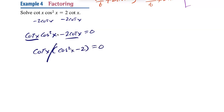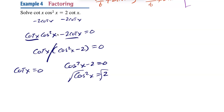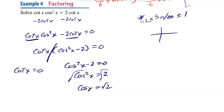Split and solve each factor separately. For cos²x − 2 = 0: add 2 to both sides, then square root to get cosine of x equals √2. But remember, sine and cosine must be between −1 and 1. √2 is bigger than 1, so this has no solution.